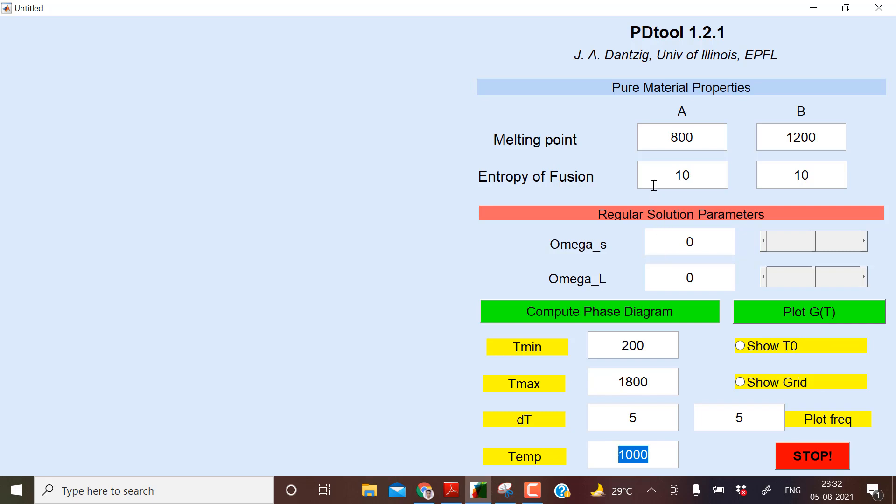So I will show you a simple phase diagram which we know - that is copper and nickel. So what is the melting point? A is copper and B is nickel. So melting point of copper is 1083. So it will be like 1083 plus 273. Let me put 1083 plus 273, that is 1356. And the melting point of nickel, does anybody know? Nickel melting point is 1455.